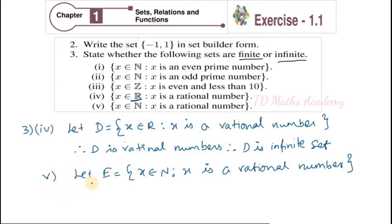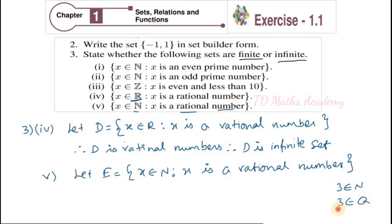Next, 5th one. Let E equal to — x element of natural number and x is a rational number. Take an example: 3 is element of natural number — yes. 3 is element of rational number — yes, because you can write 3 as 3/1, which is in P/Q format. So 3 is also a rational number.